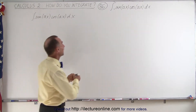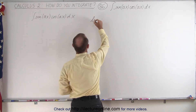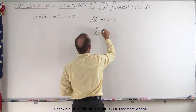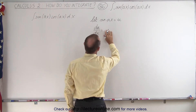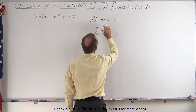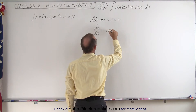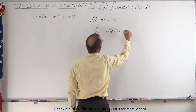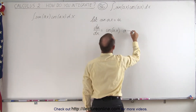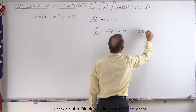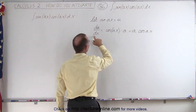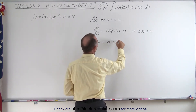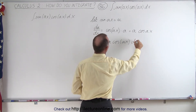So what you can do here is you can let the sine of Ax equal u, so that means that du/dx — taking the derivative of that — is going to be equal to the cosine of Ax times the derivative of the angle, which is going to be A. So this simply becomes A times the cosine of Ax, and if we then put the dx over here we get du is equal to A times the cosine of Ax times dx.